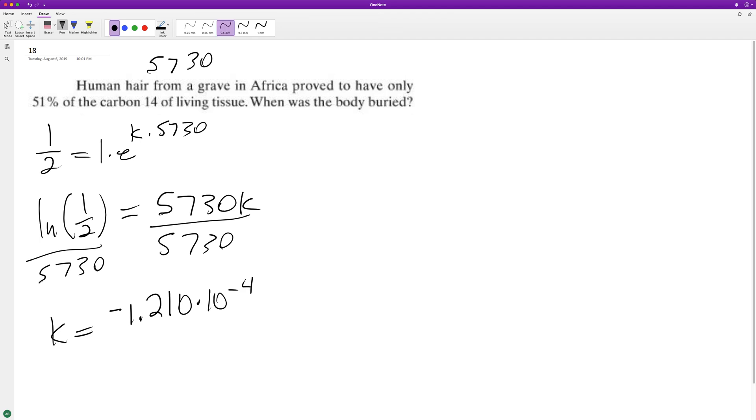So this is our K value. Now we have our initial value, which is 51% in the living carbon-14 tissue. We're gonna have Y sub not E raised to the negative 1.210 times 10 to the negative four, and we're solving for T.